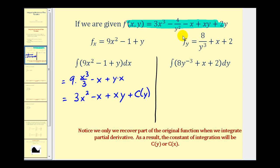Now let's determine the partial of f with respect to y. Here we'd have 0, then 8 over y cubed, this would be 0, this would be plus x, and this would be plus 2. Remember we're treating x as a constant. And now we're going to integrate this with respect to y.